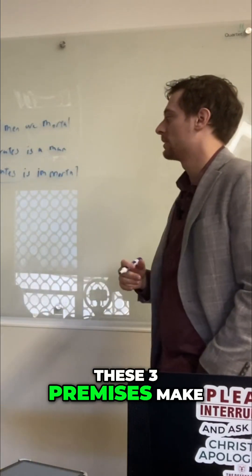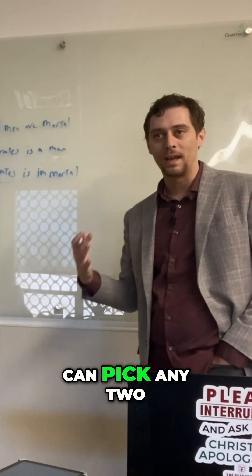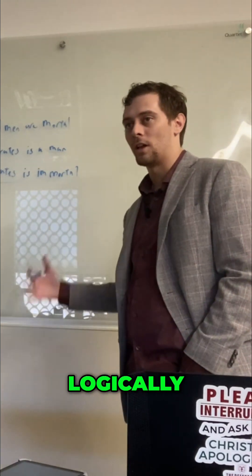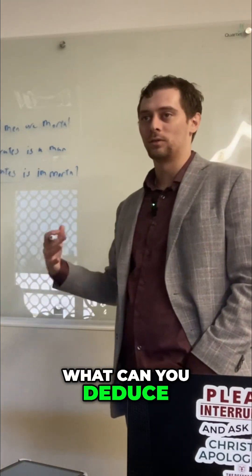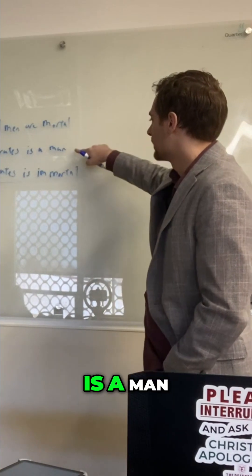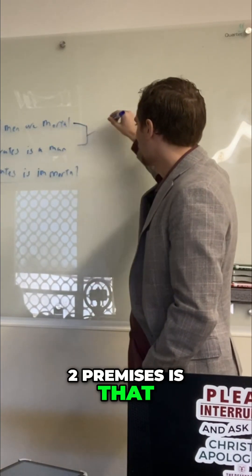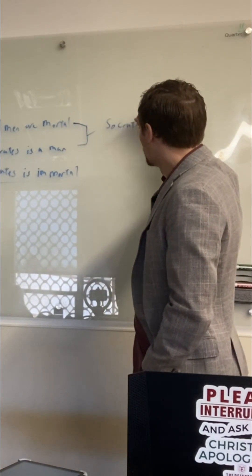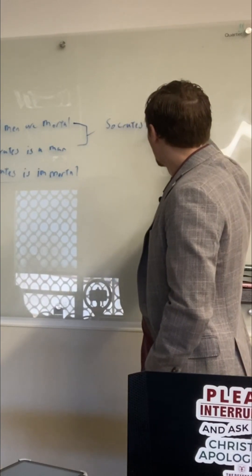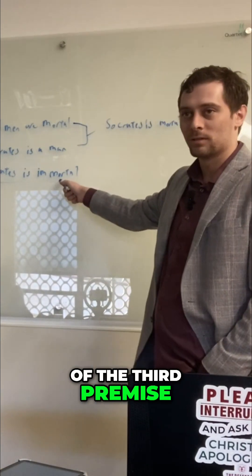These three premises make a contradiction. The way you can tell that is you can pick any two and say what follows logically — what can you deduce from it? So if all men are mortal, and Socrates is a man, the conclusion from those two premises is that Socrates is mortal, which is the antithesis of the third premise.